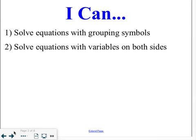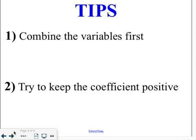A couple tips to start us off. First, you're going to want to try and combine those variables first. We're going to have variables on the left side and the right side of the equation. You're going to want to put all of your variables on one of the sides to start. And the other thing is to try and keep the coefficient, or the number in front of the variable, positive.